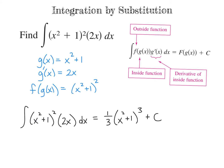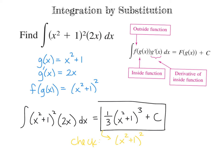Now, in order to check our work, we need to take the derivative. The outside function is something cubed, so using the power rule we bring the 3 out front — it multiplies by one-third and goes away. We keep our inside function the same and raise it to the second power, then using the chain rule we multiply by the derivative of the inside, which is 2x. The derivative of c goes away, and we get back to our original integrand, which means we found the antiderivative correctly.